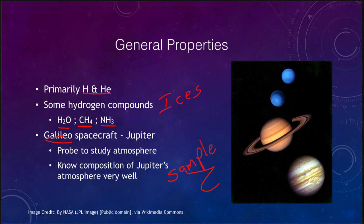That probe only survived the very few outer layers. The pressures and temperatures in Jupiter's atmosphere get extremely strong as you go further down, so it wasn't able to explore a great deal. But the outer layers that we can see are now well studied.